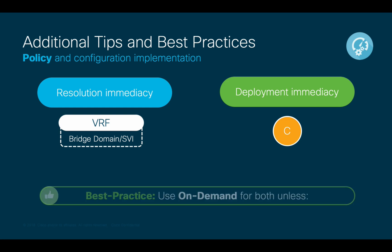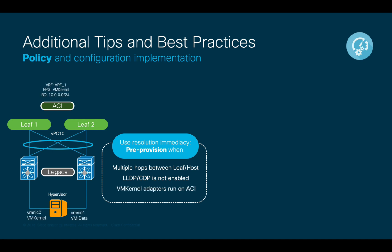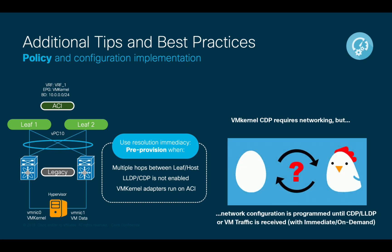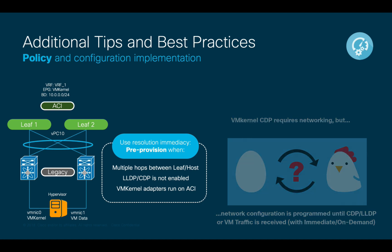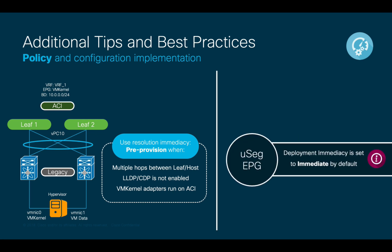There may be a few scenarios where you may want to change the default behavior. For example, if your hypervisor host is two hops away from the leaf or you don't have LLDP or CDP enabled between them, you might want to change resolution immediacy from immediate to pre-provision. Also, if you have VM kernel adapters or hypervisor management adapters connected to the ACI fabric in addition to the hypervisor VM adapters, a CDP/LLDP relationship won't be formed until you provide connectivity; therefore, pre-provisioning may be needed. As a side note, keep in mind that when micro-segmented EPGs are used, the default deployment immediacy resolution is set to immediate.